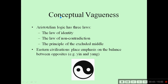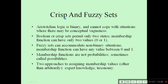So what is conceptual vagueness? There are three basic laws: the law of identity, law of non-contradiction, and the principle of the excluded middle. When we come to eastern civilizations, they place emphasis on the balance between opposites. One logic is binary and cannot cope with situations where there may be conceptual vagueness. We call this Aristotelian logic.